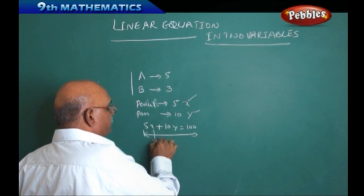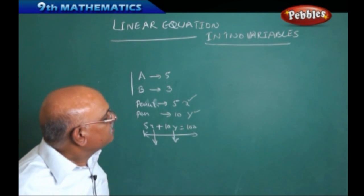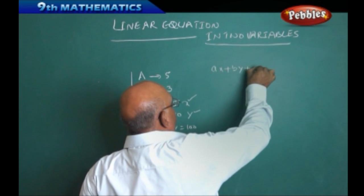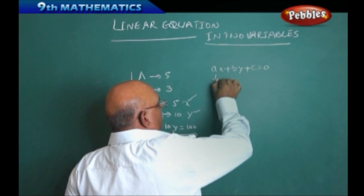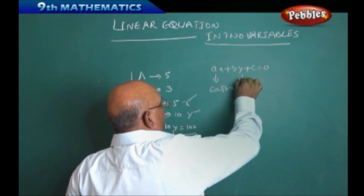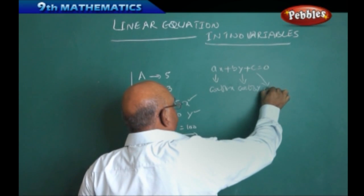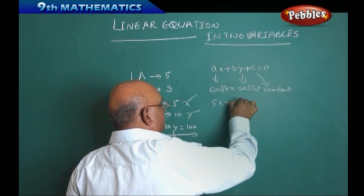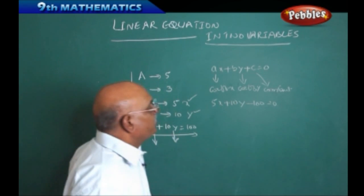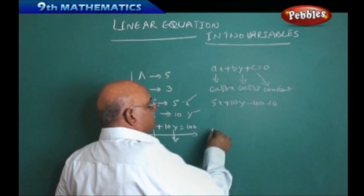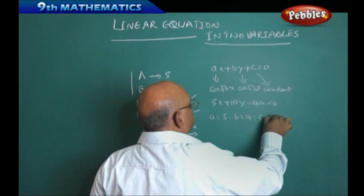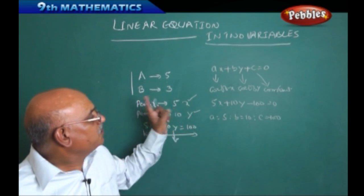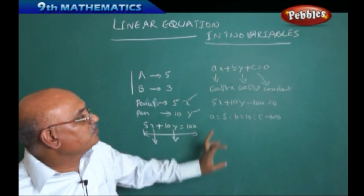This gives us an equation in two variables, where x is one variable and y is the other. Generally, these equations can be written in the general form ax + by + c = 0, where a is the coefficient of x, b is the coefficient of y, and c is the constant term. Comparing with our example, 5x + 10y − 100 = 0 gives a = 5, b = 10, and c = −100. These linear equations in two variables are very much useful for such applications.